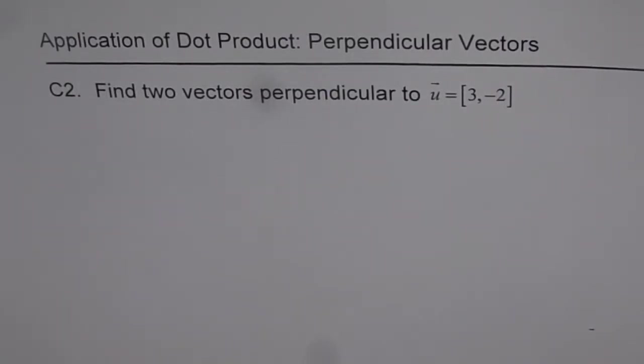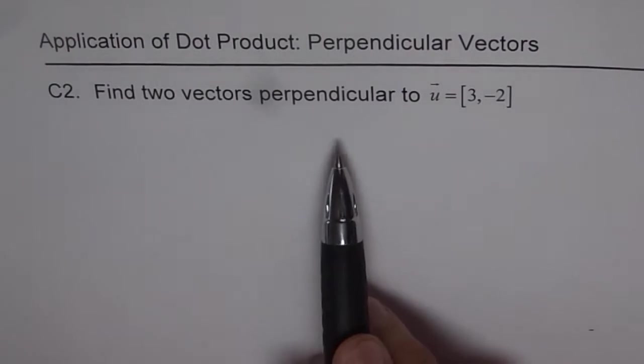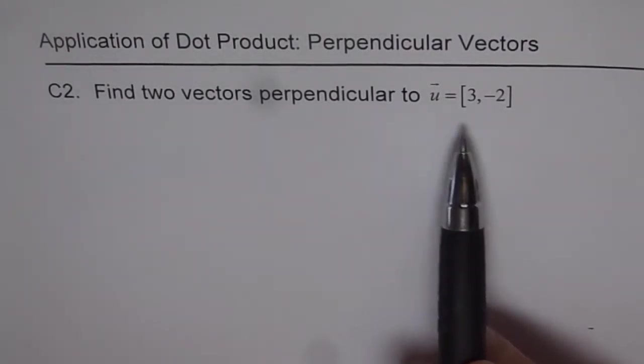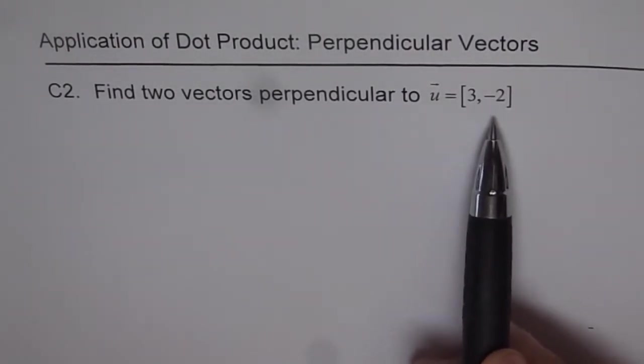Application of dot product: perpendicular vectors. Here is a communication question, C2. Find two vectors perpendicular to vector u, which is [3, -2].